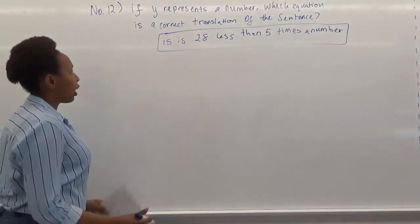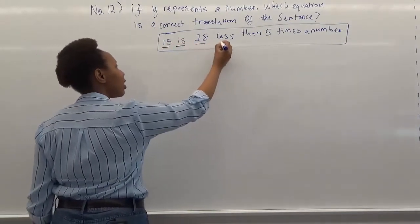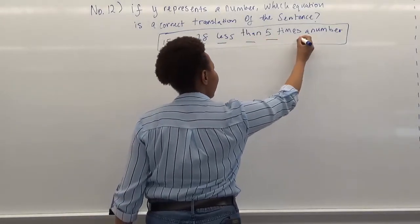So what we literally have here is 15 is 28 less than 5 times a number.